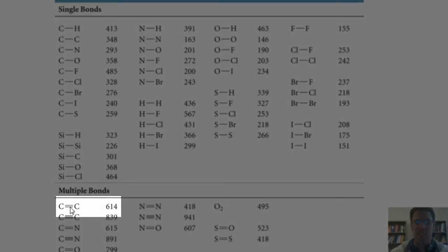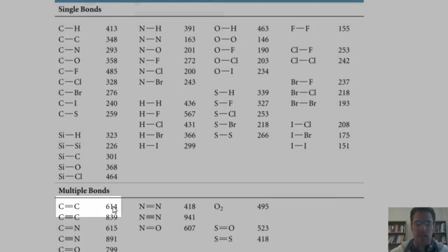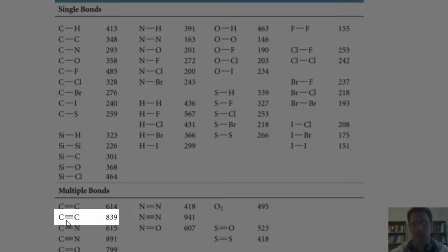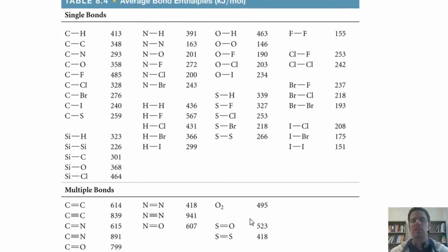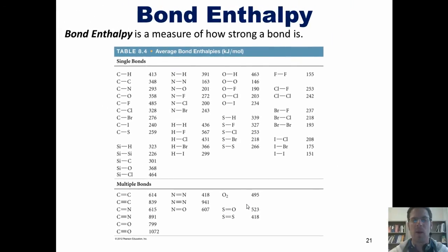while a carbon-carbon double bond is worth 614. Not surprisingly, a carbon-carbon triple bond goes up to 839. This table becomes the bread and butter of the ensuing problems that we'll do.